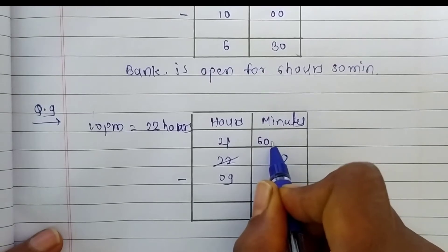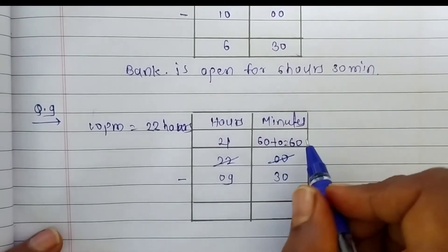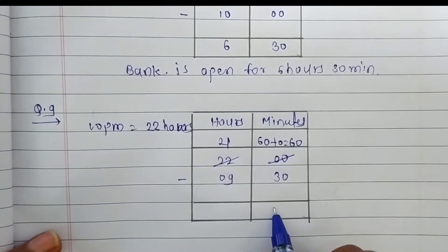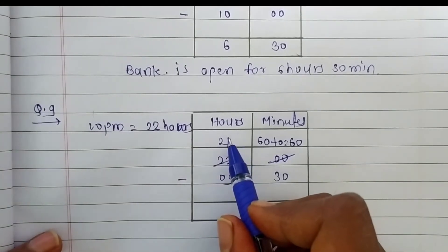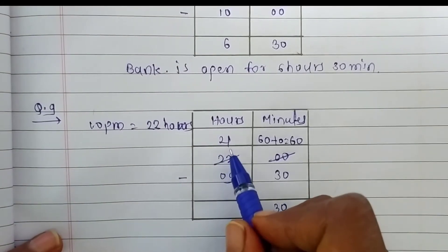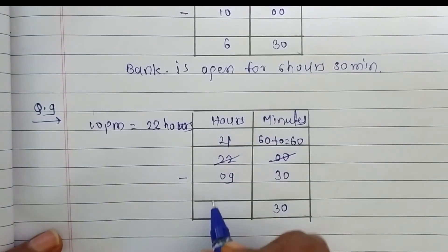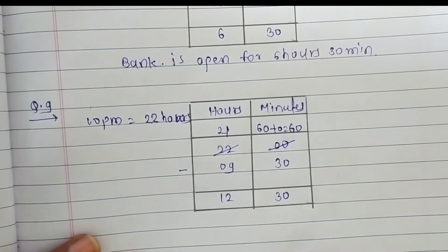60 plus 0, it's 60. Now, subtract 30 from 60, we get 30 minutes and 9 from 21, we get here 12 hours.